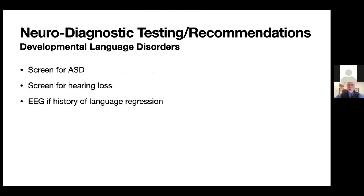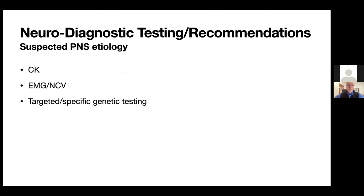For children with language delays, we want to screen for autism, screen their hearing, and check an EEG if we have concerns for language regression. If we think a child has a motor delay more due to a peripheral rather than a central process, we'll want to check a CK level to look for myopathy, obtain EMG and nerve conduction study, and targeted genetic testing to look for any genetic etiology for a neuromuscular problem.